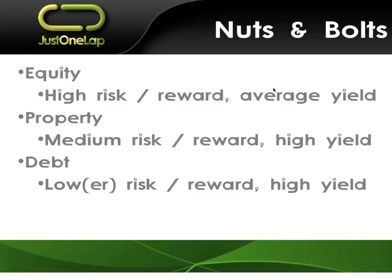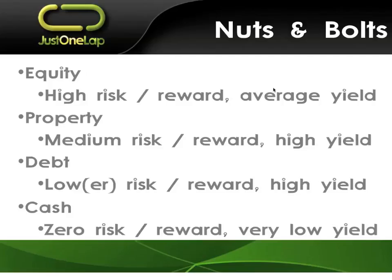Property is medium risk because they've got an underpin of solid buildings. South African property has gone from a very small, under-interesting space to a massively exciting one - and frankly we're seeing bubble territory there. Over the longer term you're going to get medium reward and a much higher dividend yield. You should be buying property on dividend yields of around 8% or 9%. Debt is lower risk and reward with higher yield - though if you hold African Bank preference shares, that wasn't so low risk.